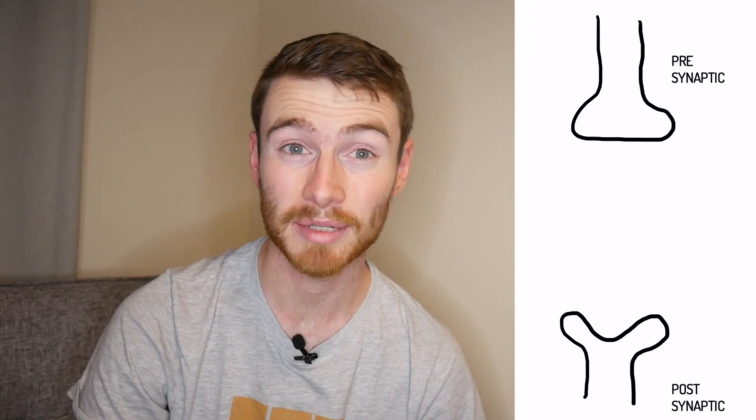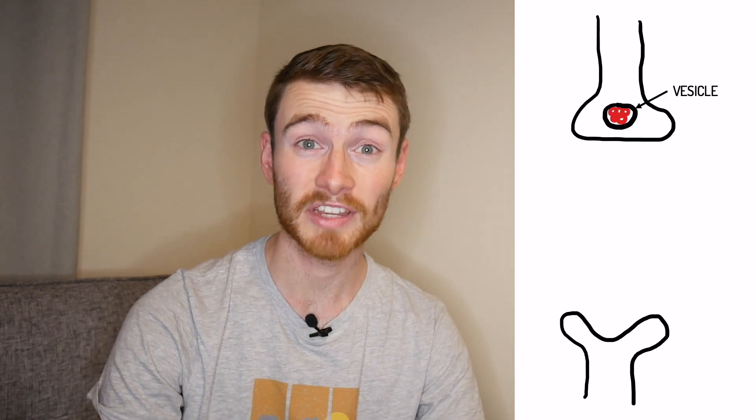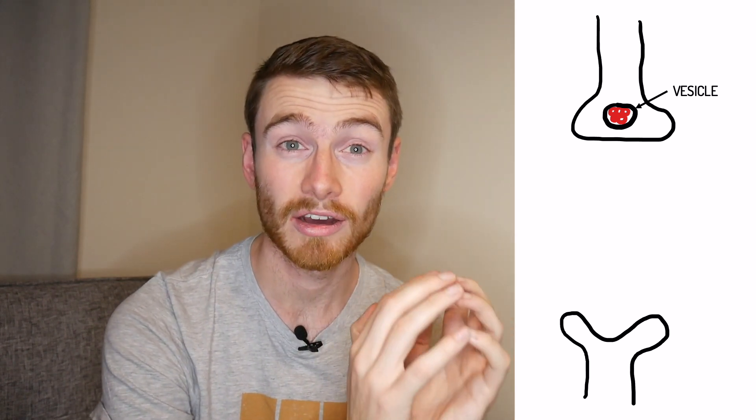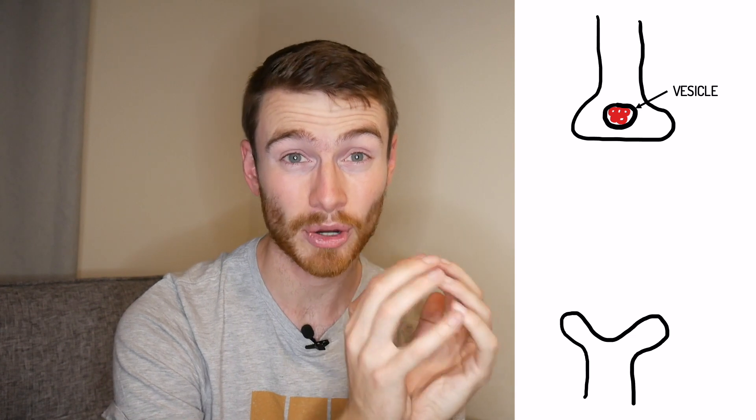Now if we look at a synapse we've got a pre-synaptic bit and a post-synaptic bit, and the bit in the middle — that is the synapse itself. As the electrical signal travels along the nerve it gets to the end, and this depolarisation triggers some vesicles — a membrane-bound little pocket of chemicals — and it triggers that membrane-bound pocket to fuse with the membrane of the cell, so the chemicals inside it get kicked out into the synapse.